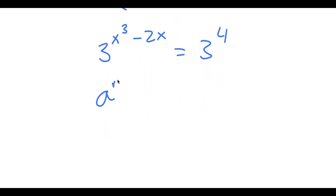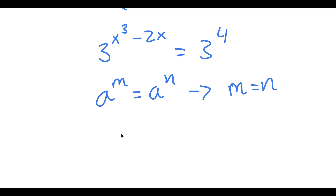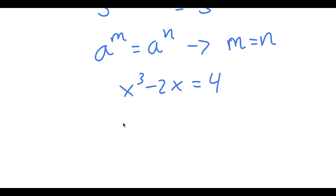Since we have a to the power of m equal to a to the power of n, this means m equals n. So x cubed minus 2x is equal to 4, meaning x cubed minus 2x minus 4 is equal to 0.